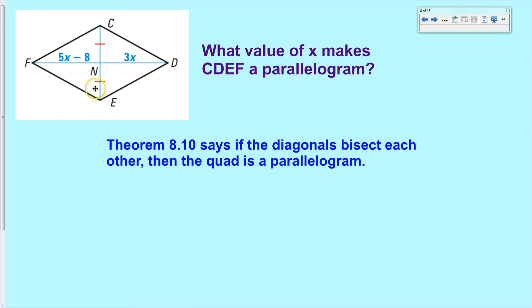Now one of them is marked as being chopped in half, so that has already been bisected. So if we can just show that this segment is the same as that segment, then we have a parallelogram. To do that, simply set them equal to each other and solve. That simple.